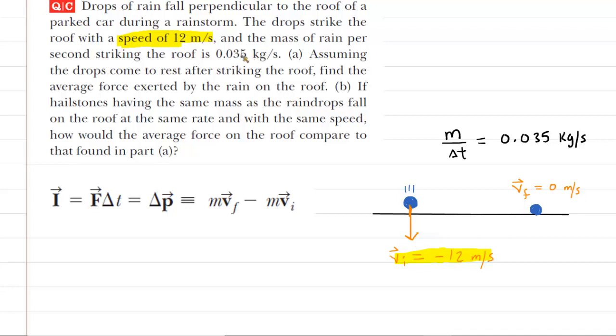And then we're given this somewhat strange quantity. It says that the mass of rain per second, and that's an unusual quantity. We don't often see mass per unit time. And they're giving us a value of 0.035 kilograms per second. And that, because it's mass per unit time, can be symbolized by m divided by delta t.